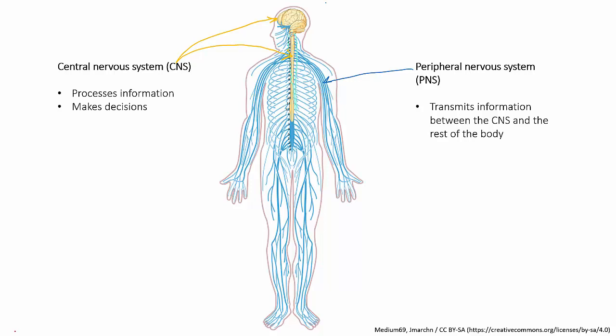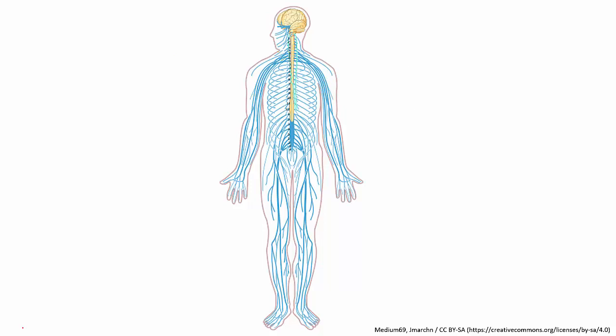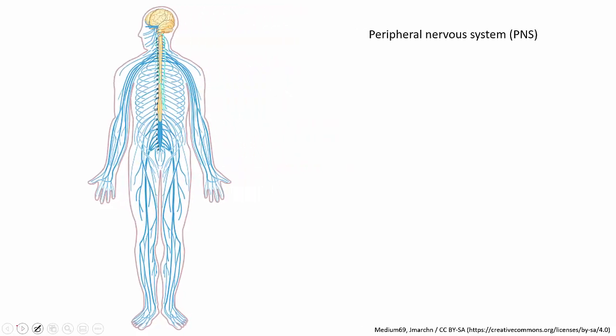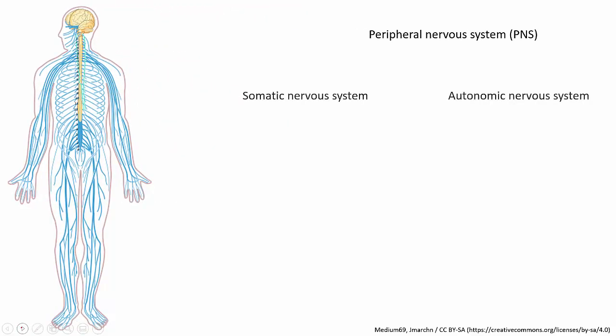Let's focus on the peripheral nervous system. The PNS is itself divided into two subsystems, known as the somatic nervous system and the autonomic nervous system.